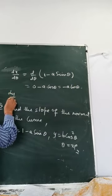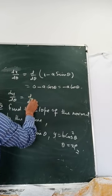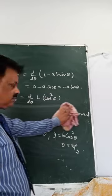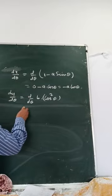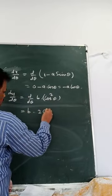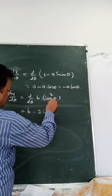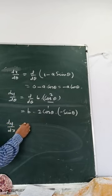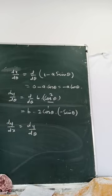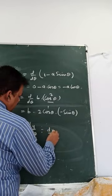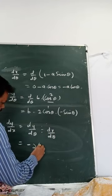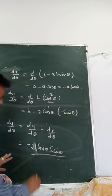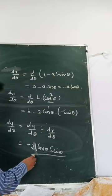dy by d theta equals d/d theta of b cos squared theta. Using the chain rule: b times 2 cos theta to the power 1, and derivative of cos theta is minus sine theta, giving minus 2b cos theta sine theta. Then dy by dx equals dy by d theta divided by dx by d theta, which is minus 2b cos theta sine theta divided by minus a sin theta.